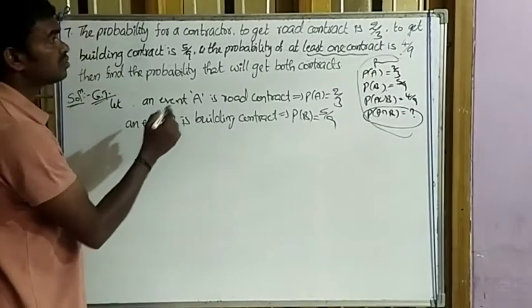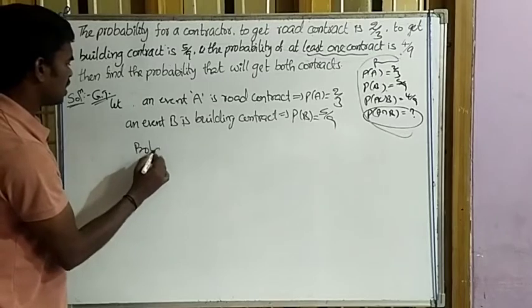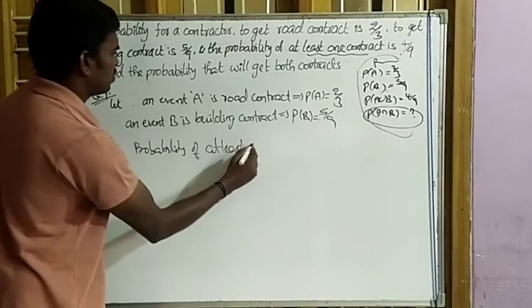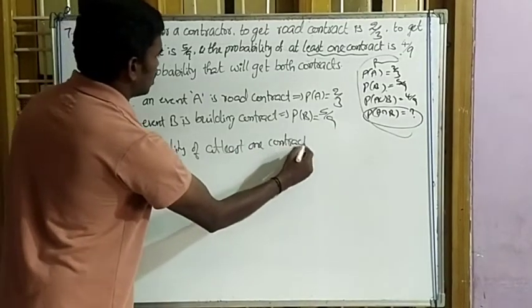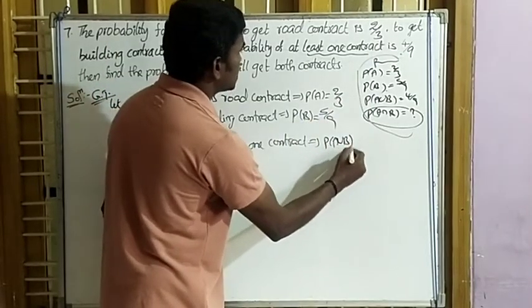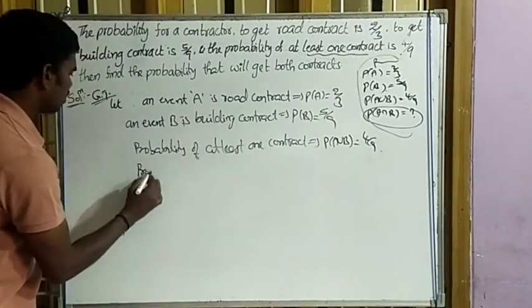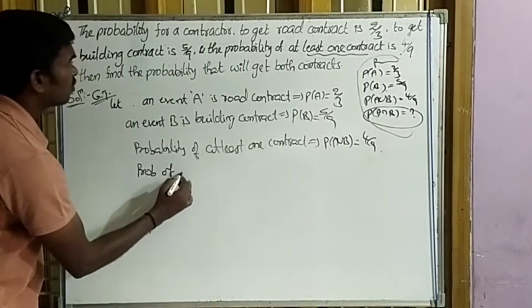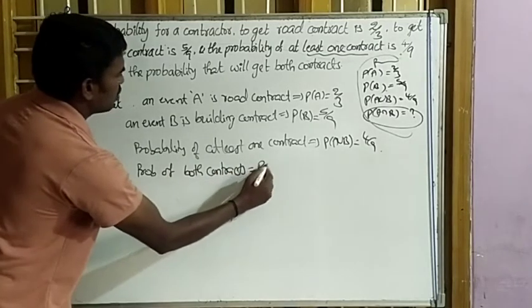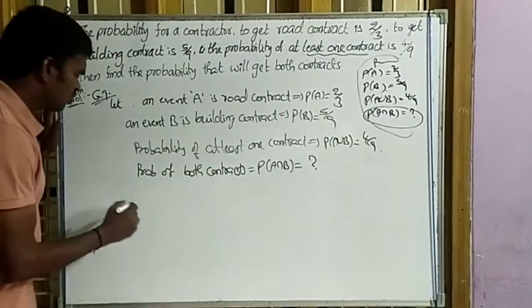At least one contract: P(A∪B) = 4/9. What is asked: find the probability of both contracts, that is P(A∩B).